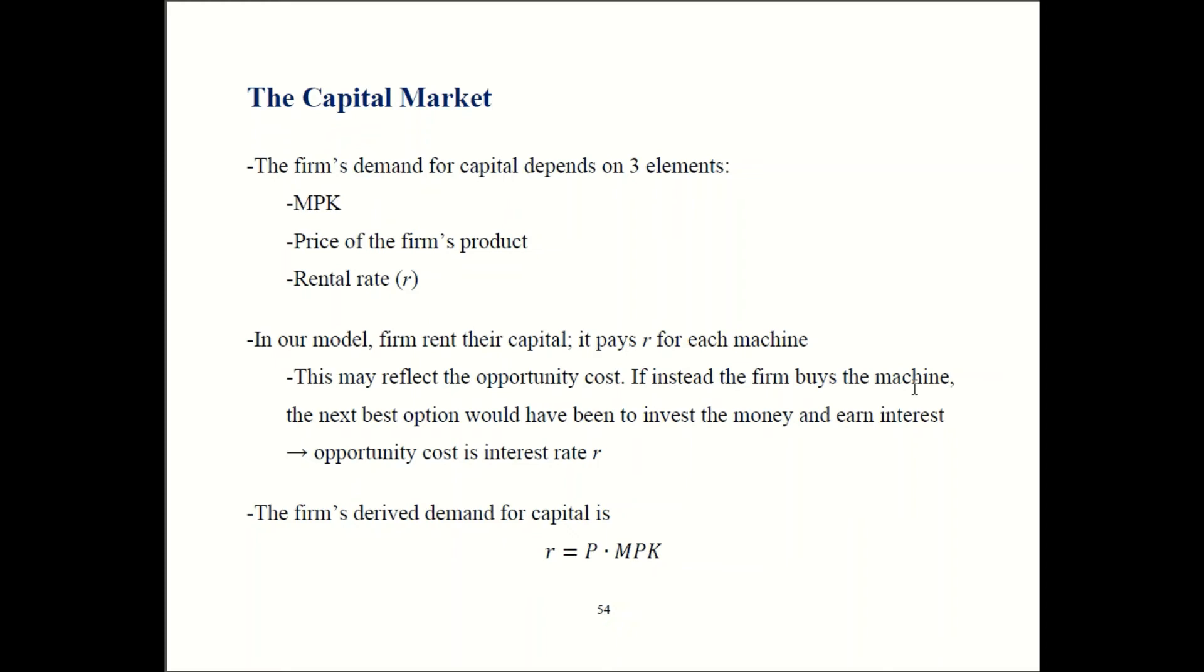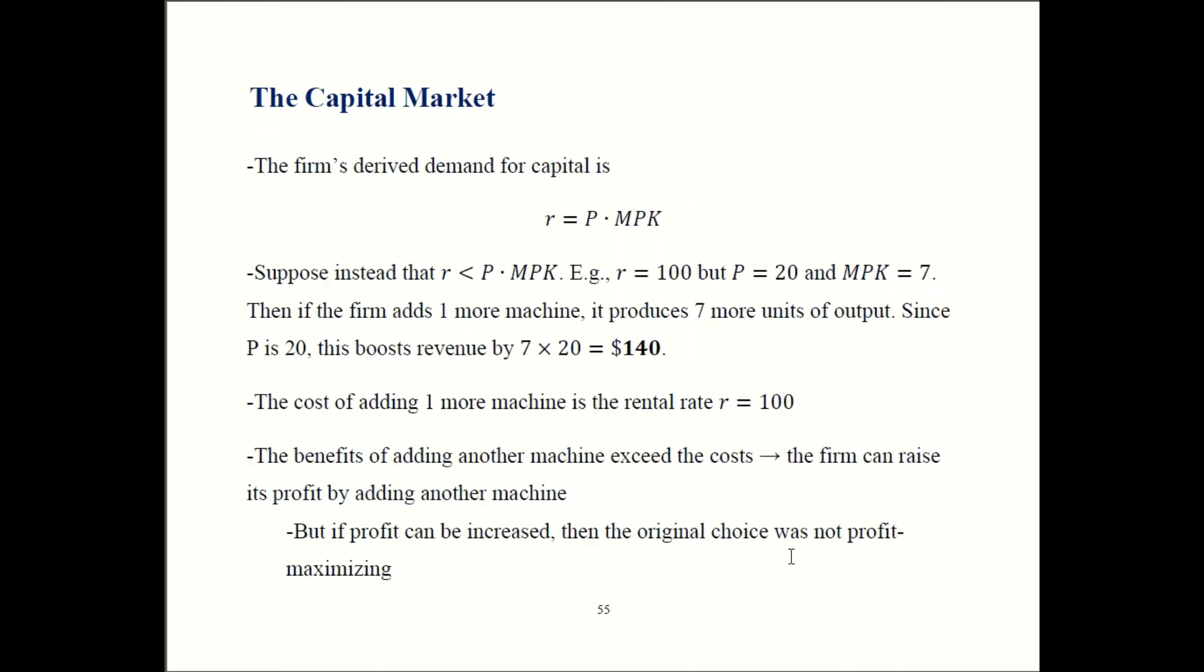Derived demand for capital is going to be given by the final equation. It's going to be the rental rate equals the value of the marginal product. In the context of the market for capital, the value of the marginal product means the price of the final good multiplied by the marginal product of capital. It's very similar to something we saw earlier. We saw derived demand for labor was wage equals P times MPL.